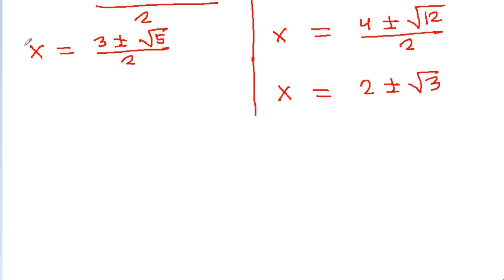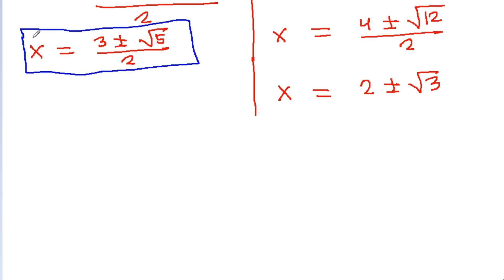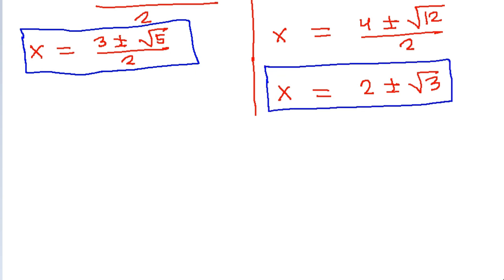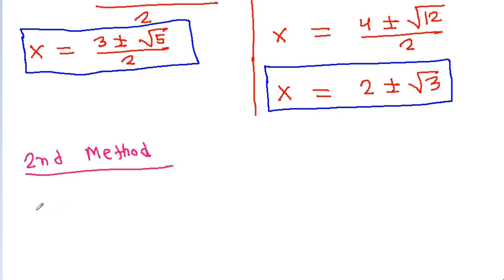So x = (3 ± √5) / 2 and x = 2 ± √3. The second method: we have given x⁴ - 7x³ + 14x² - 7x - 1 = 0.